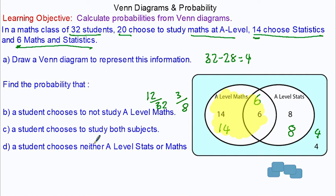Find the probability that a student chooses to study both subjects. Well that would be our intersection, which is six out of 32, and we can simplify that fraction to three over sixteen.